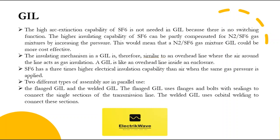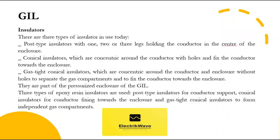SF6 has three times higher electrical insulation capability than air when the same gas pressure is applied. Two different types of assembly are in parallel use: the flanged GIL and the welded GIL. The flanged GIL uses flanges and bolts with sealings to connect the single sections; the welded GIL uses orbital welding to connect these sections. The conductor needs to be held in the center of the enclosure so that the electric field distributes equally in the concentric pipe system. Insulators are typically made of epoxy resins with filler material. There are two types of filler used today: silicon and aluminum oxide. Requirements for various formulas come from features such as mechanical strength, maximum allowed temperature, electric insulation behavior, surface discharge sensitivity, and surface tracking withstandability.